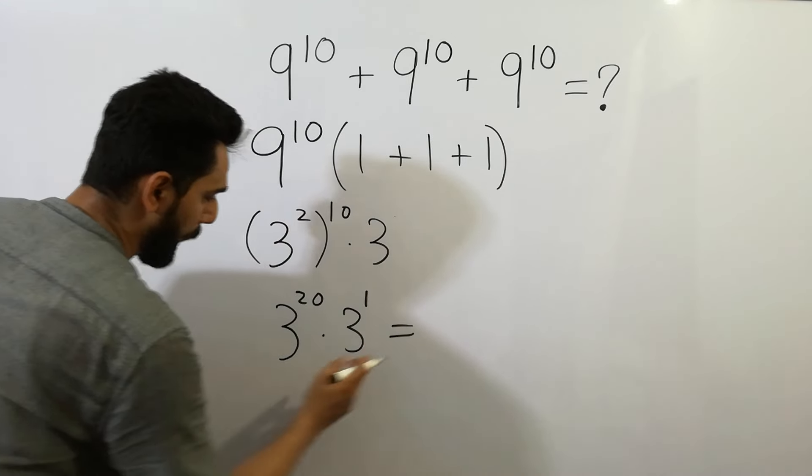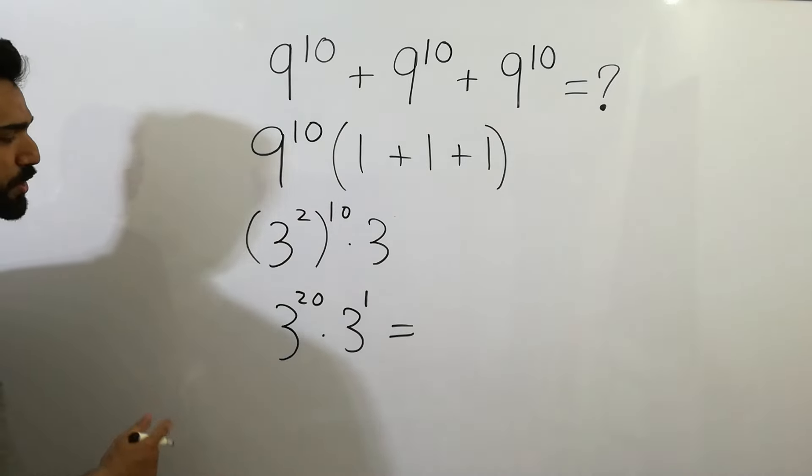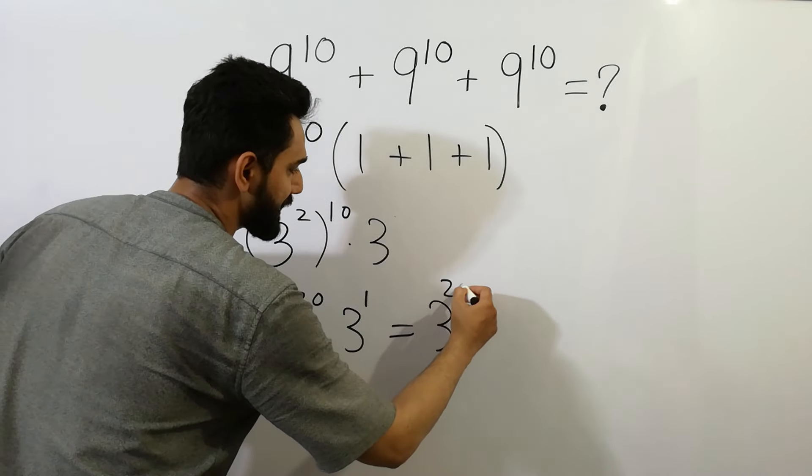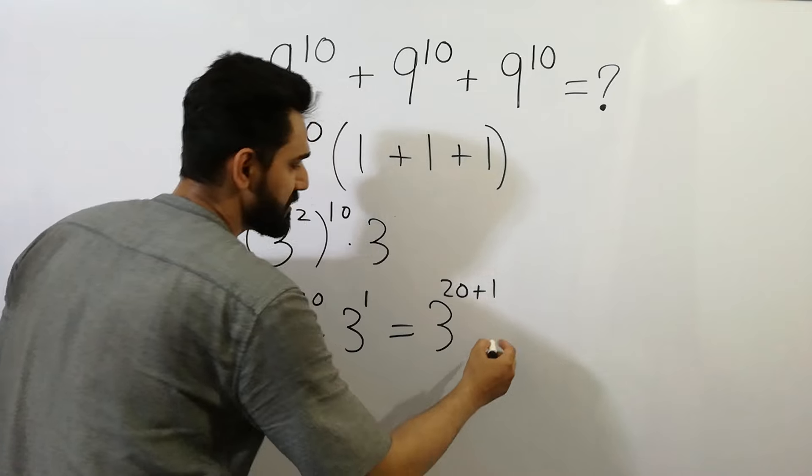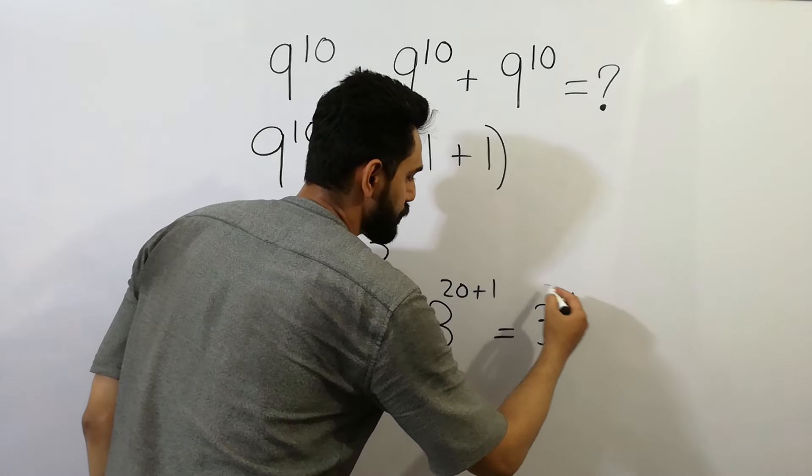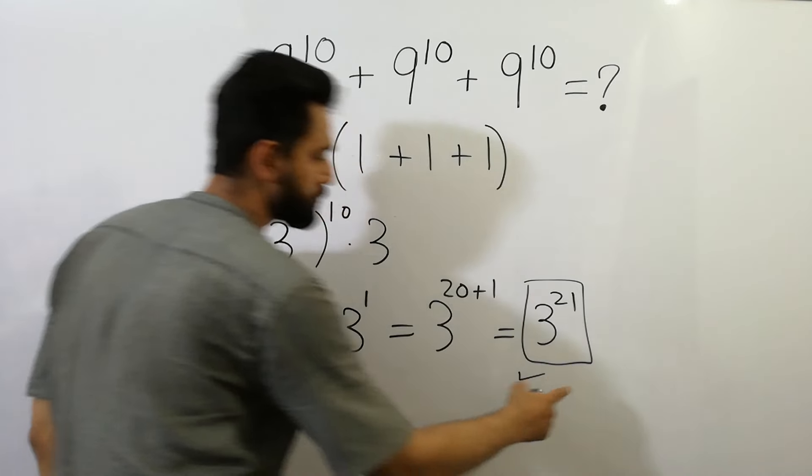Since these bases are the same, we get 3 to the power 20 plus 1, which is equal to 3 to the power 21. That's our answer.